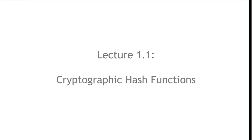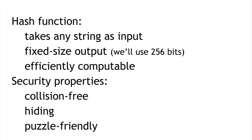In segment 1.1, we're going to talk about cryptographic hash functions — what they are, what their properties are, and then their applications. A cryptographic hash function is a mathematical function with three attributes: it can take any string as input of any size, it produces a fixed-size output (we'll use 256 bits, because that's what Bitcoin does), and it has to be efficiently computable — given a string, you can figure out the output in a reasonable length of time.